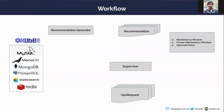Let's see the basic workflow. First, recommendation generator is always watching the KubeDB resources. Currently there are six databases supported: MySQL, MariaDB, MongoDB, PostgreSQL, Elasticsearch, and Redis. If the recommendation generator finds any recommendation for those databases, it creates the recommendation object.